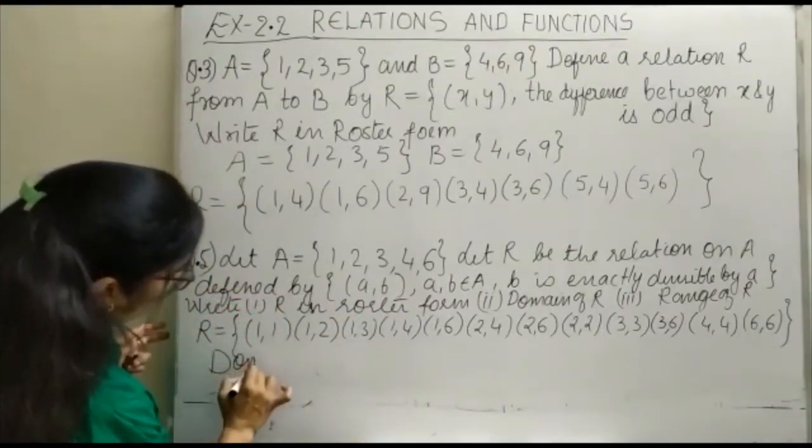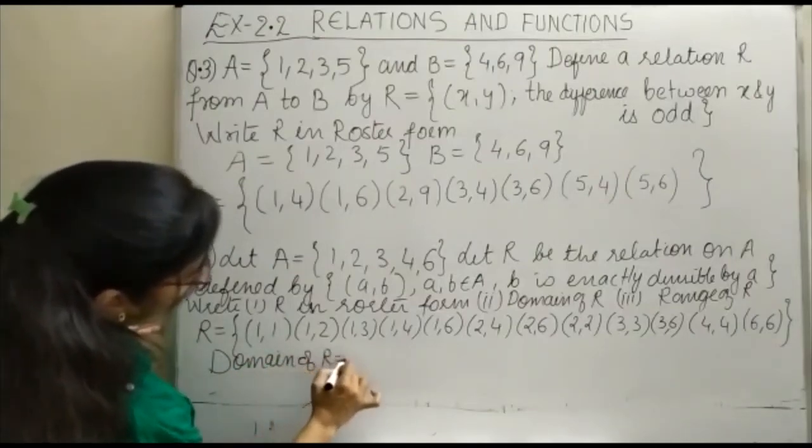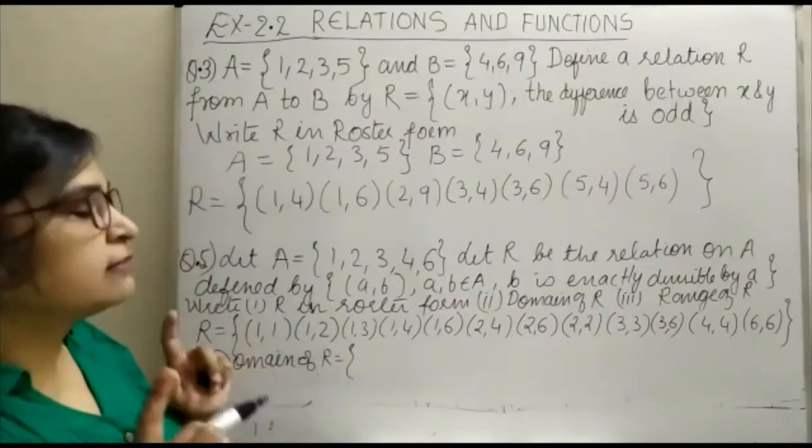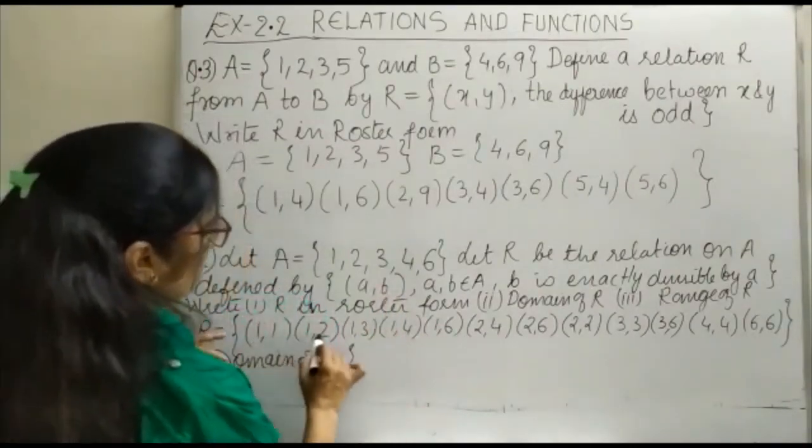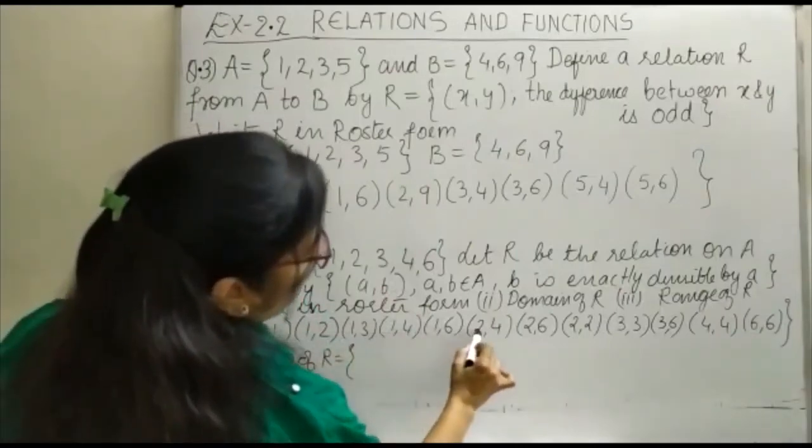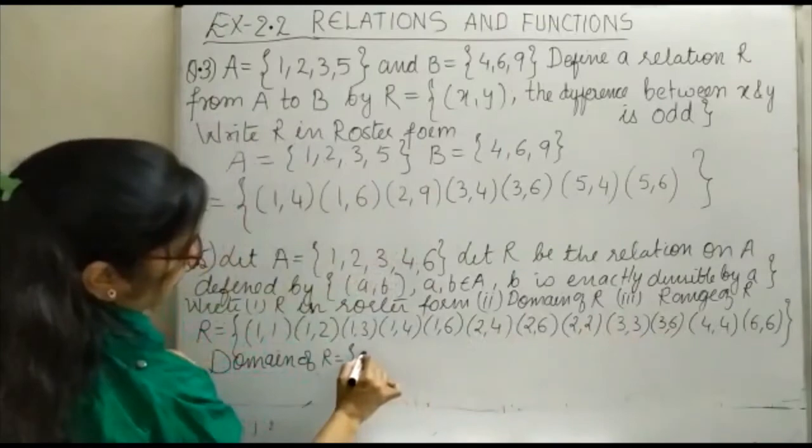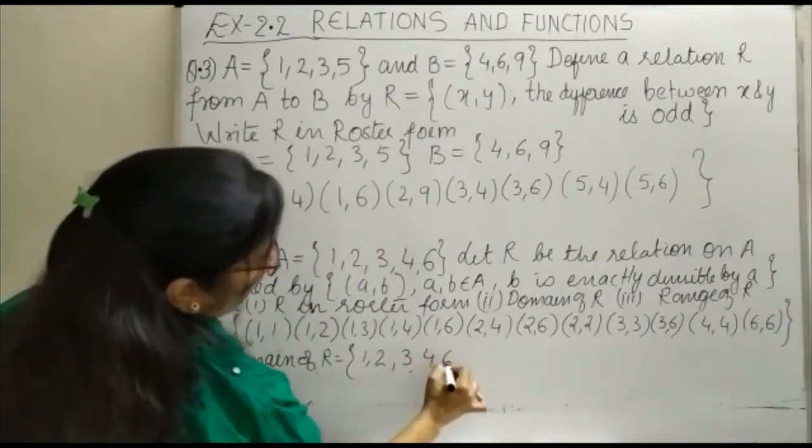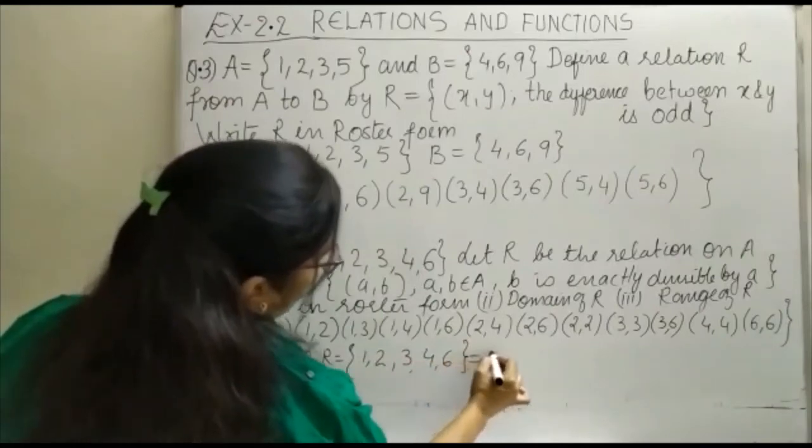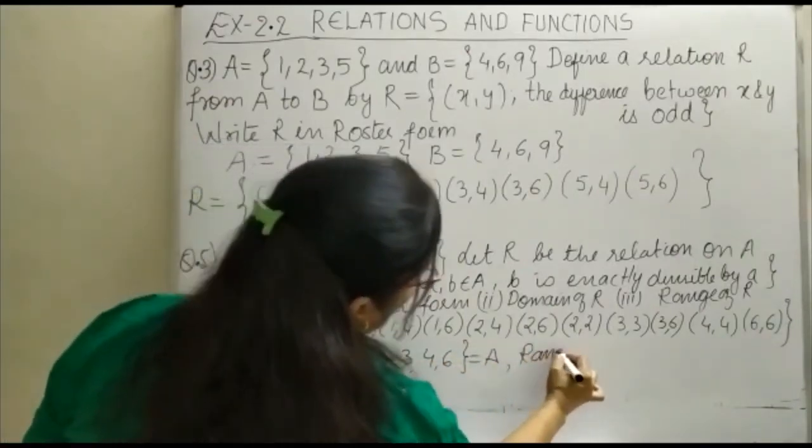Domain of R: Domain, you know, is the collection of first elements of the ordered pairs. So you can see the first elements go up to: 1, 2, then 3, then 4, then 6. It is {1, 2, 3, 4, 6}, and we can say it equals A.